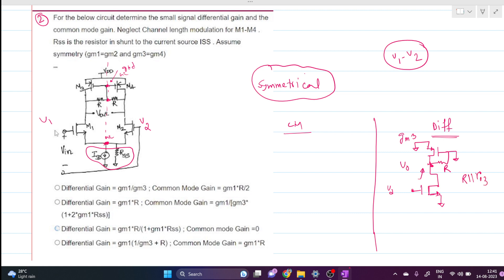This becomes a normal common source amplifier and the resistance looking here is R parallel ro3. Here it is mentioned that channel length modulation is neglected, so output resistance of each MOSFET is infinite. R parallel infinite means R. The gain of this circuit, Vout by Vd, is nothing but minus gm1 times R. This is our differential mode gain.